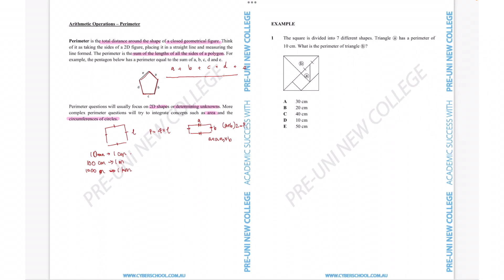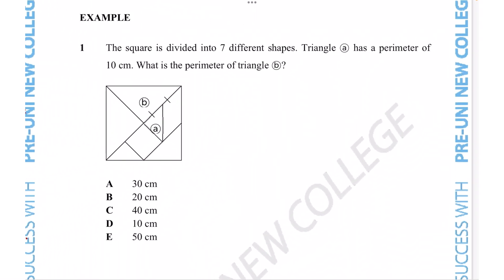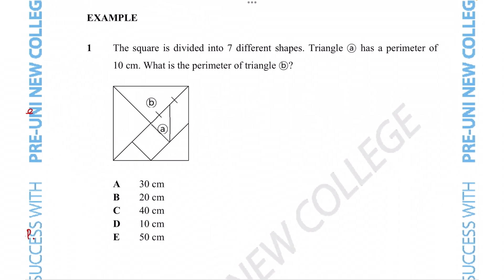Right, so let's try out this example question where we hopefully put to use the kind of techniques and tips that we learned in the previous slide. Here we see a square has been divided into seven different shapes. We're told that triangle A has a perimeter of 10 centimeters, and we want to use that information to figure out the perimeter of triangle B. Triangle B is this large triangle within the square here, and we can see that triangle A is a much smaller portion.